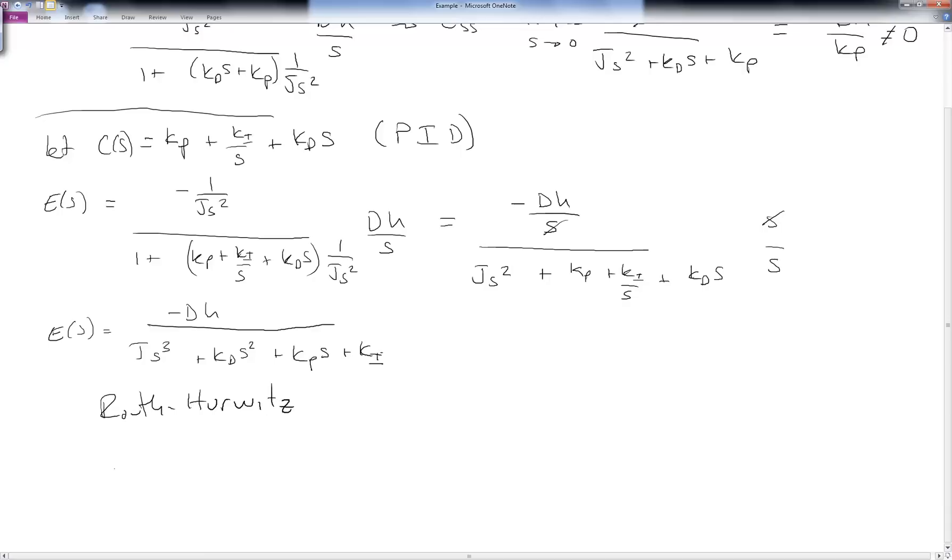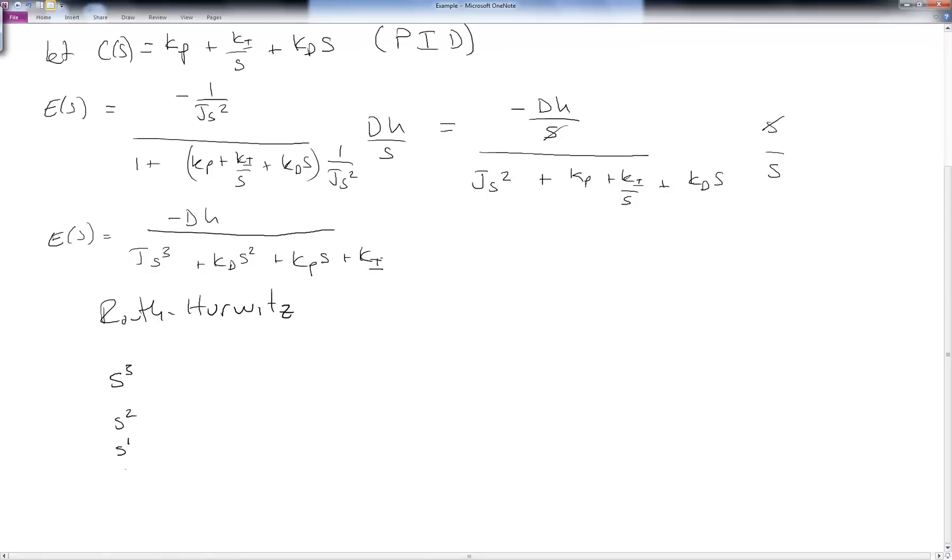And Routh Hurwitz, remember we formed by taking s to the third, s squared, s to the one, and then s to the zero power. Draw out our columns and rows. Go ahead and populate. We have j, and then kp, and then zero. We have kd, and then ki, and then zero. This is going to be term b1, and then we're always going to end up with the last term of the polynomial down there. So b1 is going to be kp times kd minus j times ki all over kd.